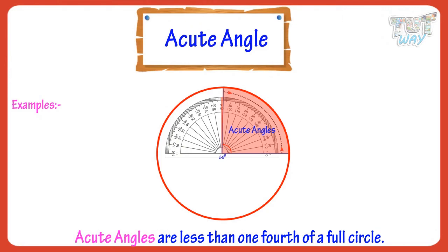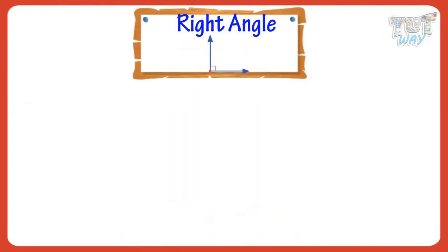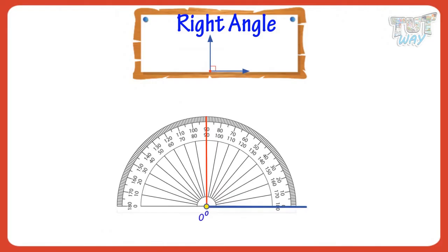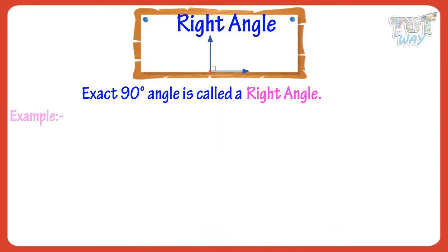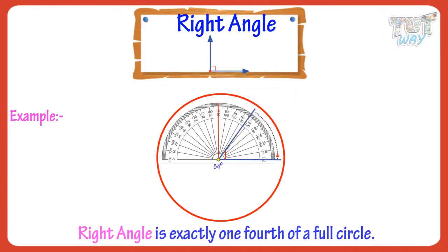Now, let's see what is a right angle. An exact 90 degree angle is called a right angle. The symbol for right angle is this. So, we represent right angle like this. Here are some examples of right angles. Right angle is exactly one-fourth of a full circle.